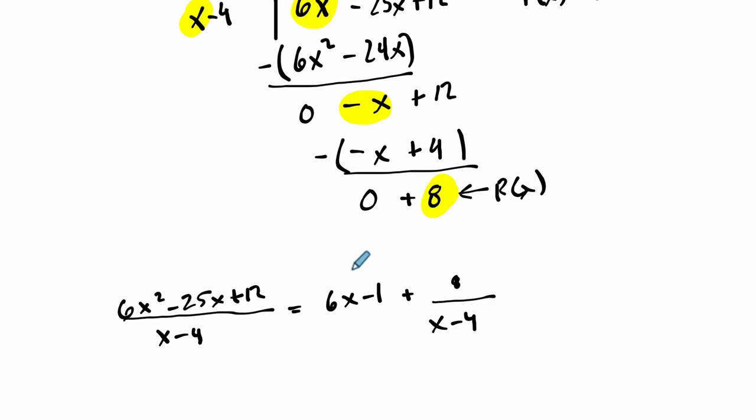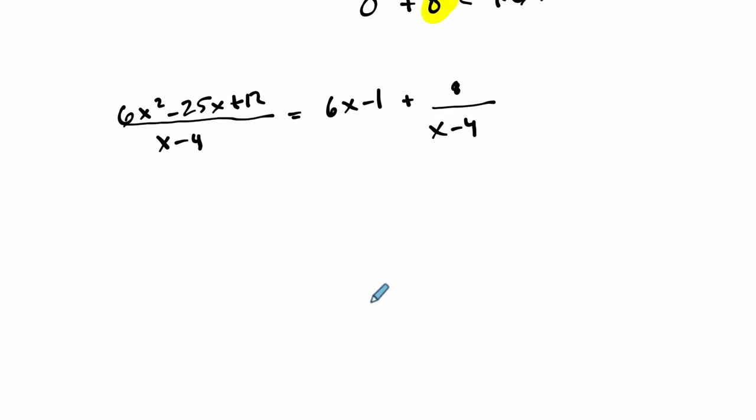If you don't want to write it this way, multiply both sides by x minus 4. On the left hand side, you get your polynomial function, 6x squared minus 25x plus 12. And then on the right hand side, you get x minus 4 times 6x minus 1 plus 8. The x minus 4 is canceled, you distribute to both parts. And this shows you that this polynomial function is the product of these two factors plus 8. And if you test it out, that will work.